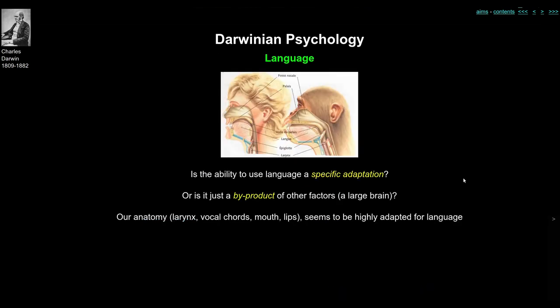Looking at a cross-section through a human woman and a chimpanzee, they obviously have a lot in common in terms of the structure of their head and neck. Darwin was looking at the similar physical structure of apes and humans and asking: is language a specific adaptation — a set of adaptations in the face, neck, and muscles — or is it a byproduct of other things, such as having a large brain? When you look at the anatomy specifically, you'll see large differences in the larynx and vocal cords, the mouth and the lips between humans and chimpanzees, and many of these differences seem to be highly adapted for language. Darwin would argue that language has been selected for throughout human evolution.